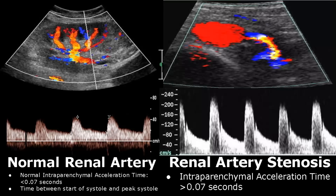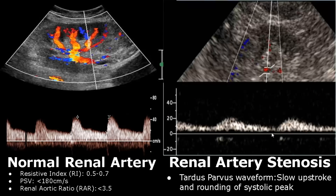Some cases of renal artery stenosis may give a tardus parvus waveform. There is a slow upstroke and rounding of the systolic peak — a very blunt systolic peak, whereas in the normal case it is sharp. Thank you so much for watching. Please subscribe and stay tuned for more imaging videos.